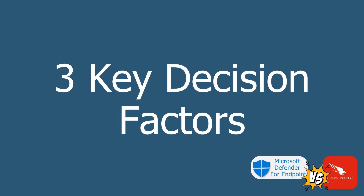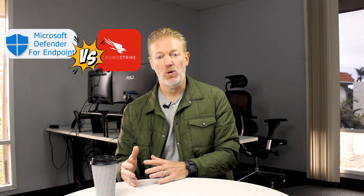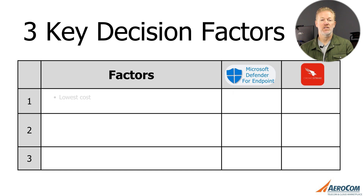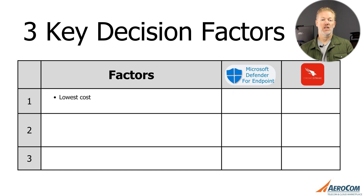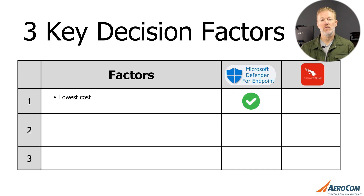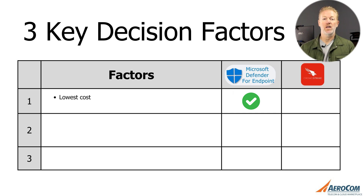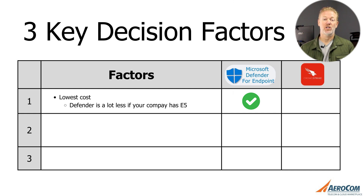I'm going to give you the shortcut right out of the gate — the key decision factors when looking at CrowdStrike versus Microsoft Defender for Endpoint. The first is cost. Microsoft Defender for Endpoint costs less, so if your company is looking for the most cost-effective solution, that's probably where you'll lean, especially if your company already has an E5 license, because it's included with that.